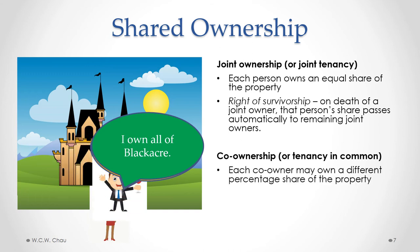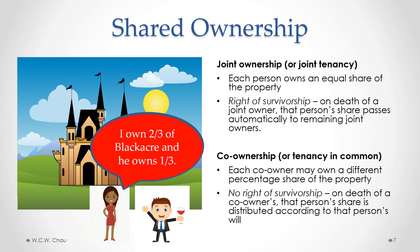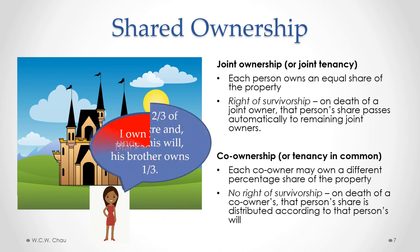The second way is co-ownership or tenancy in common. With co-ownership, each owner may own a different percentage — for example, Claire owning two-thirds and Igor owning one-third. With tenancy in common, there is no right of survivorship. On the death of one co-owner, that person's share is distributed according to their will. So if Igor's will says his one-third share goes to his brother, Claire would still own her two-thirds and Igor's brother would own the remaining third.